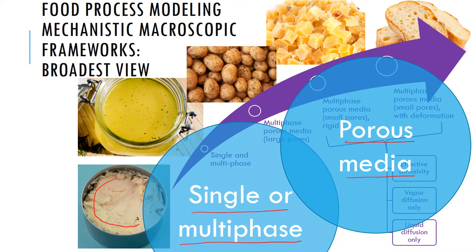The two broad groups of physics-based models are single or multiphase models and porous media-based models. When you have a simple solid, or even a mixture of solids in a simple process — for example, heating of a canned solid in a canning process — this is the simplest process in food. Similarly, a single fluid being heated in a heat exchanger, or a mixture of fluids in a mixing process, can be modeled using just the fluid equations. These are relatively simpler processes.